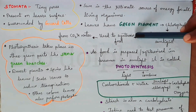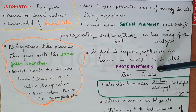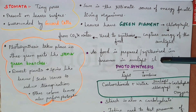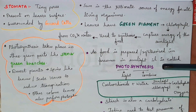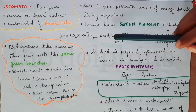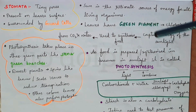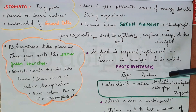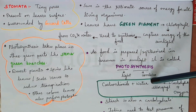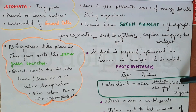Food is synthesized in the presence of sunlight. This process is called Photosynthesis. Photo means light, synthesis means to combine. So carbon dioxide and water combine in the presence of sunlight and chlorophyll to form carbohydrates and oxygen. Carbohydrates are the food produced.